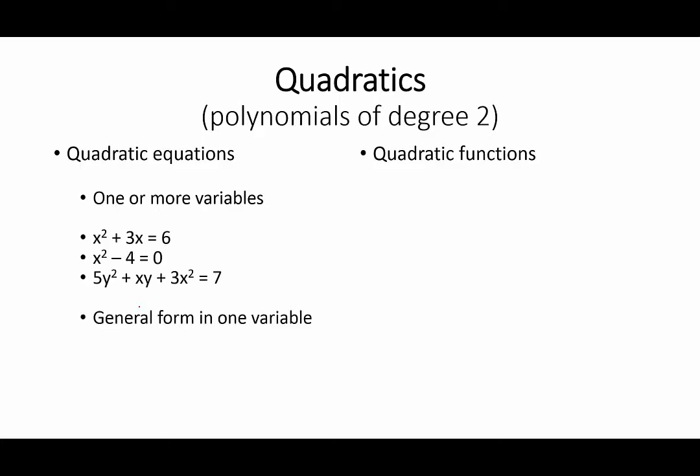The general form in one variable is this, where a, b, and c are parameters, they are real numbers. And these are real numbers such that a is different from 0, because if a were 0 then this term would collapse, and this would be a linear equation, provided of course that b is different from 0.